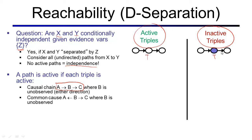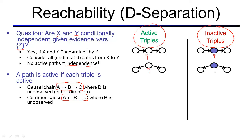The next one we consider is the common cause, where we have a variable b which points to both a and c. In this case also, if the middle node is unobserved, we have an active triple. If the middle node is observed, we have an inactive triple.